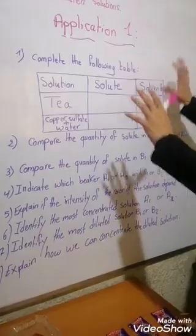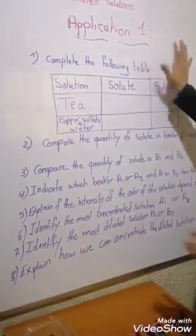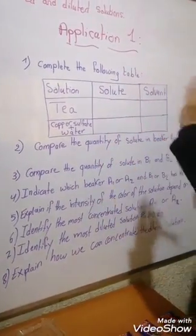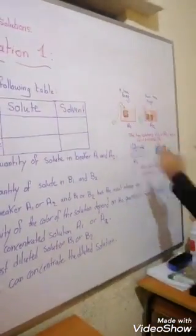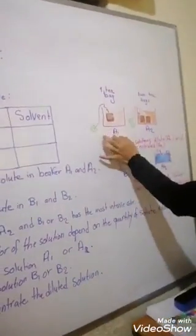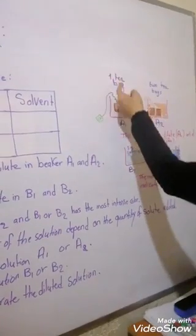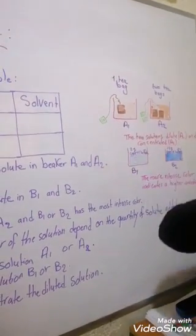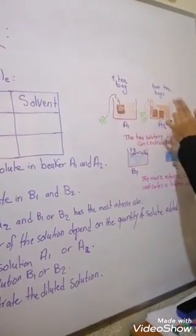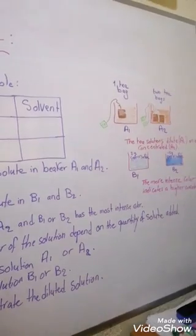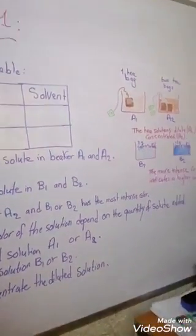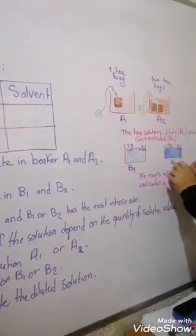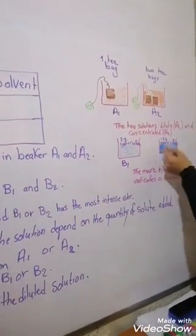Now let's solve application one to understand concentrated and diluted solutions. We have four beakers: in beaker A1 we put one tea bag, in A2 we put two tea bags, in B1 we put 2 grams of copper sulfate, and in B2 we put 15 grams of copper sulfate.